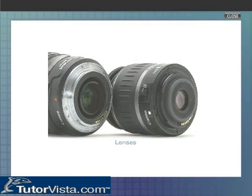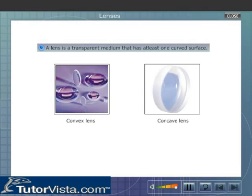Lenses. A lens is a transparent medium that has at least one curved surface. It is used for changing the direction of a beam of light.